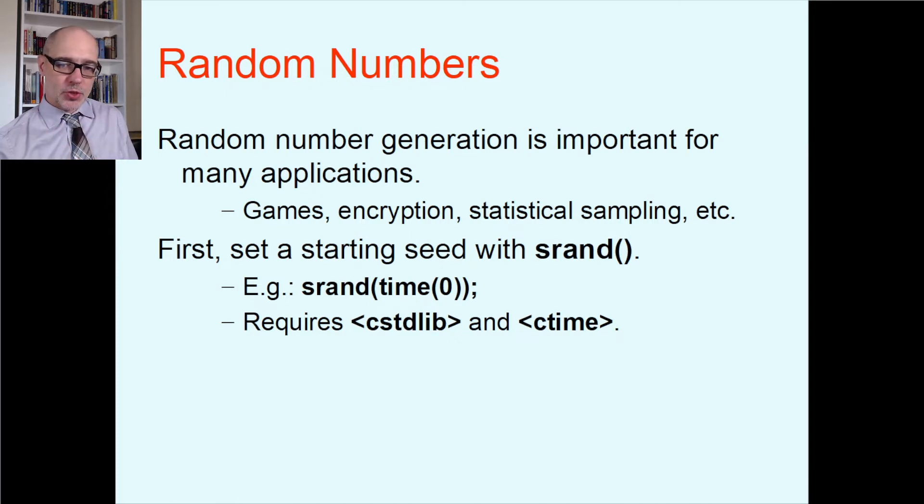But the point is that the function called time, when you send in zero, is going to report the current clock time, and therefore that will be different every time you run the program. Unless you're so incredibly fast at running the program, you can do it twice in the same second. As long as you can't do that, you'll be starting with a different number every time as you seed the randomizer, and therefore different runs of the application will be developing different numbers. Now, in order to access that, SRAND is in the C standard library, C-S-T-D-L-I-B for short. And the time function that gets the current clock time in seconds, that's in the C time library.